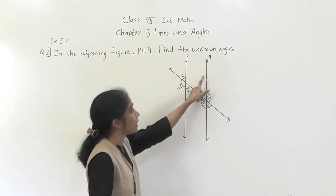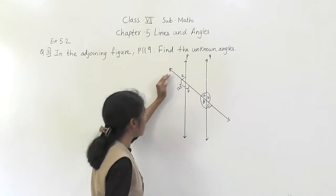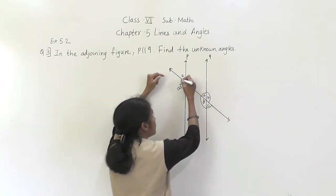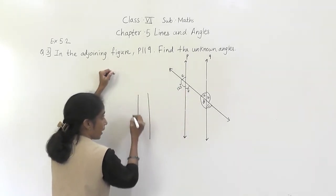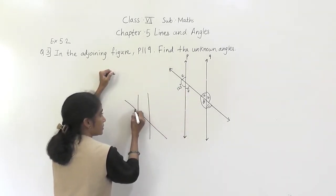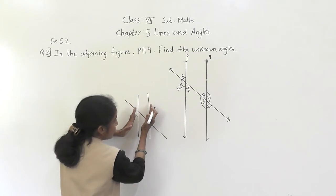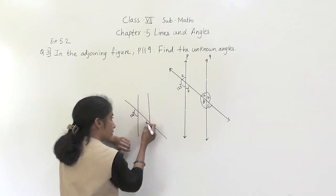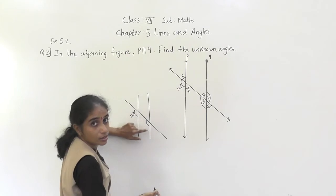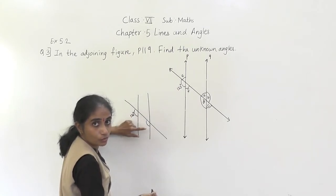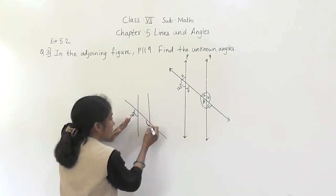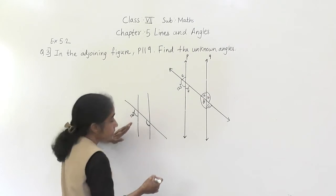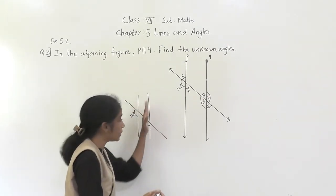What is given? These two lines are parallel. This angle is given as 125 degrees. These are the parallel lines, and this angle is given as 125 degrees. This is the transversal and these are the parallel lines.